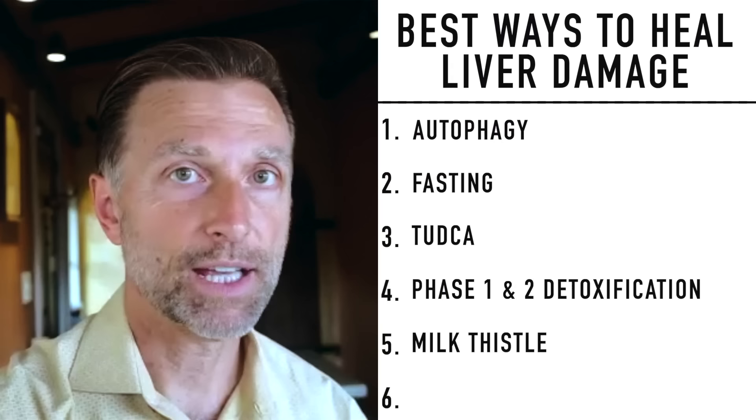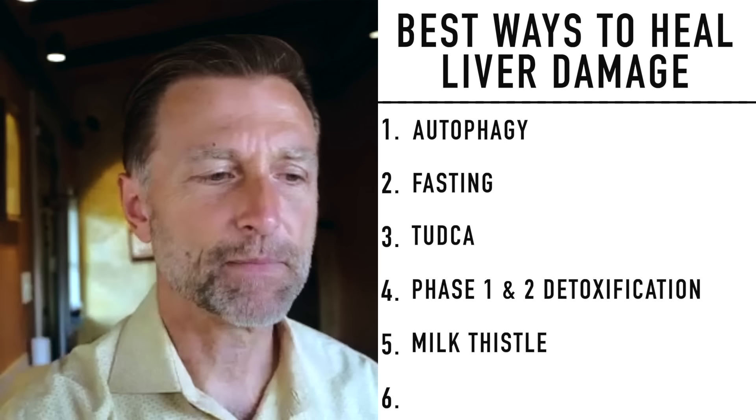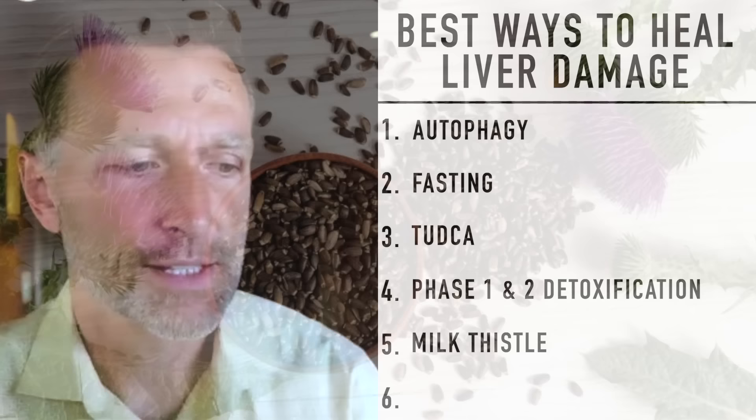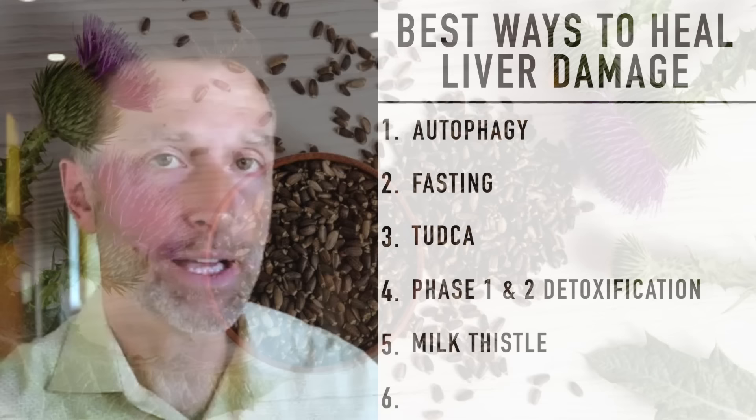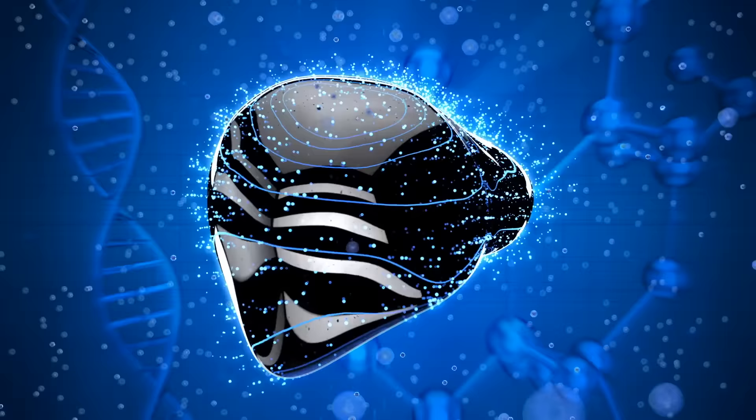And the next one on the list is milk thistle. So as you can see, we're really hitting this problem over the head with a sledgehammer, because these are all the most potent things to help your liver. Milk thistle is a very interesting herb. It's this weed that you can consume the seeds. In fact, a lot of people have it in their backyard. So you can grab some and grind the seeds and put it on your salad.